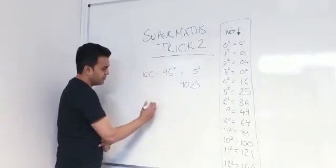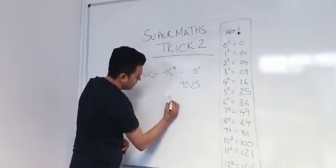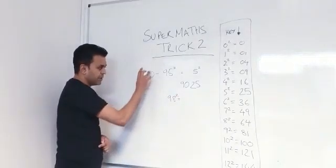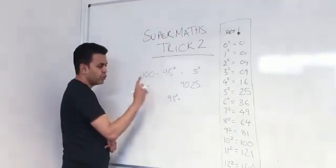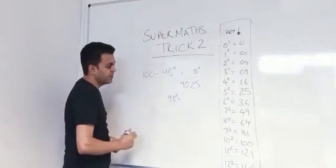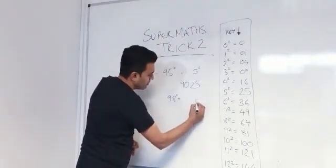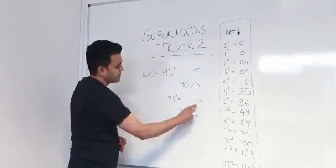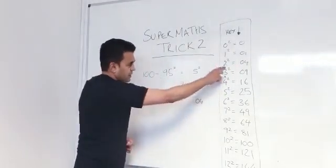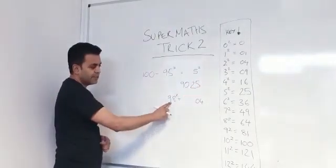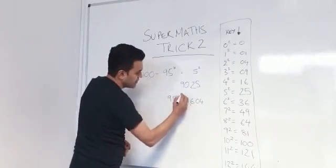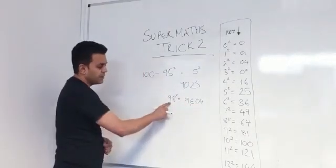Watch. Same method. 98 squared. How close to 100? I'm not going to even write this. That's 96. 9604 is 98 squared.